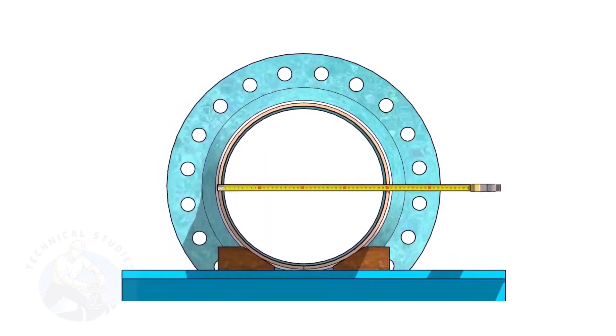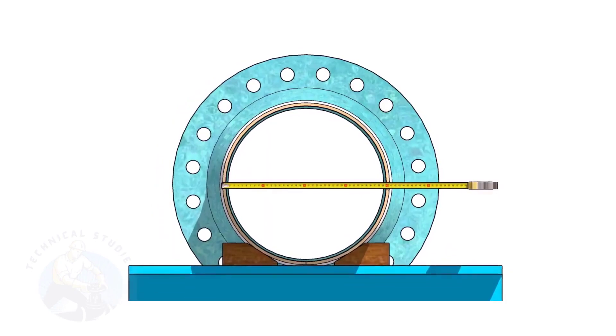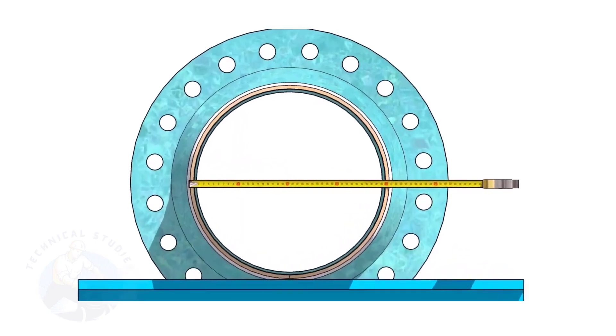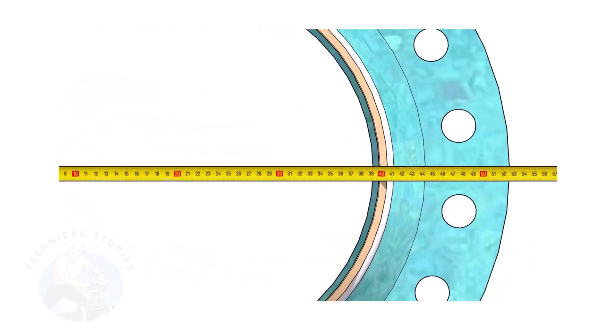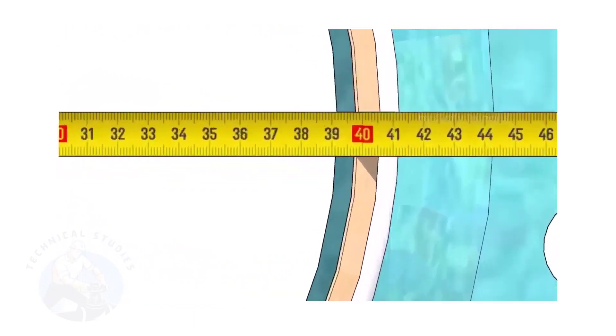Check the outer diameter of the pipe. Here, the diameter of the pipe is 406 millimeters.